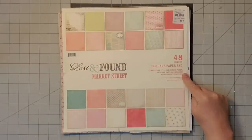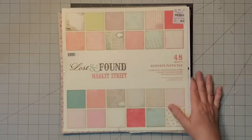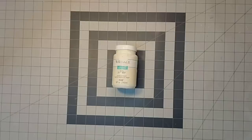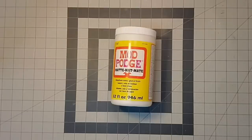I'm also going to be using one sheet from this collection, Lost and Found Market Street. It was very inexpensive because I got it at Tuesday Morning. I'm going to use some white Waverly chalk paint in Ivory, my Distress Oxide ink pad, and finally some Mod Podge.